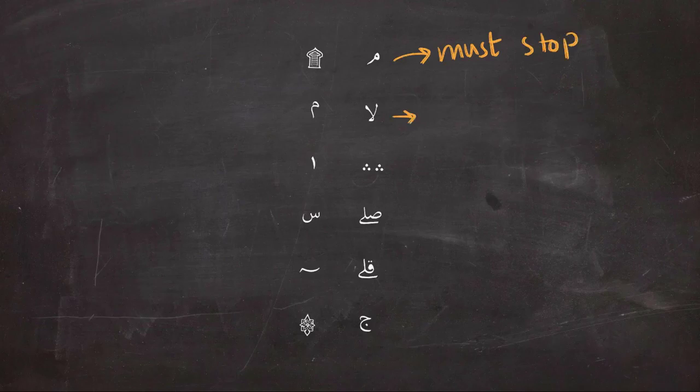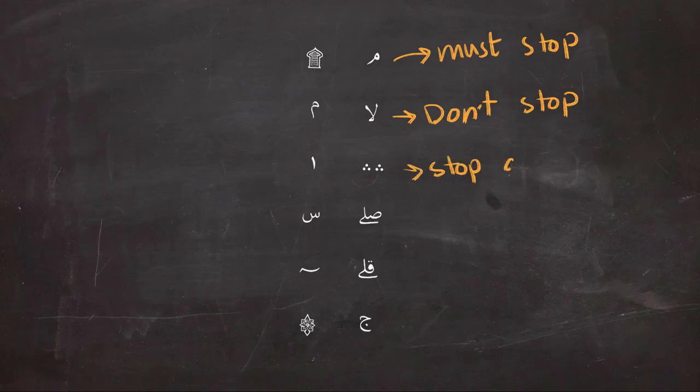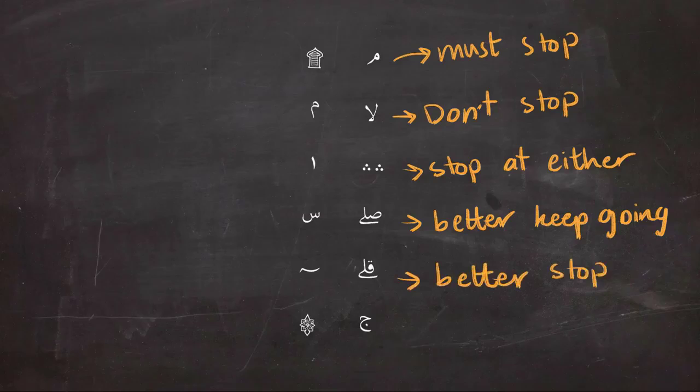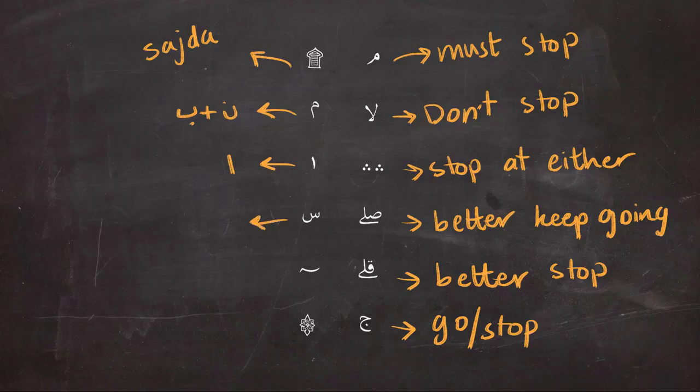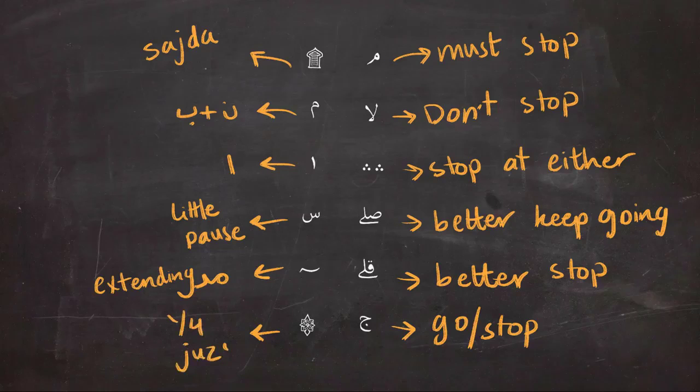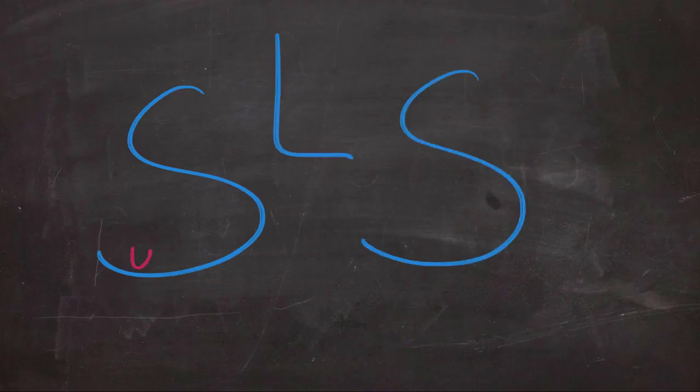These were the 12 signs you'll see in the Quran. Here's a quick summary of what they mean. Try to remember them—the best way to learn is by reading a lot of Quran because practice makes perfect. This is the end of today's lesson. I hope you learned something new. If you did, like and share the video for others to learn from it.